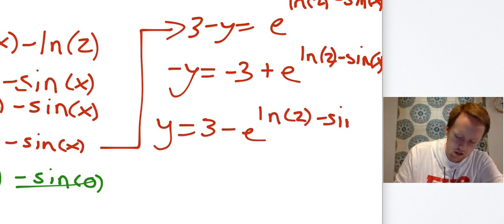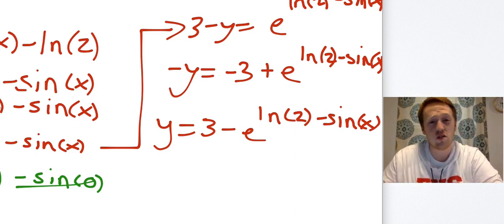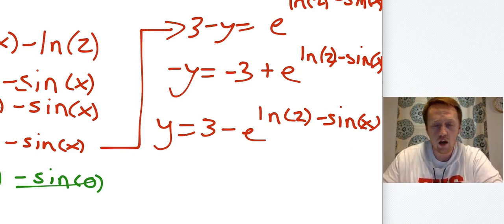And then I need to get rid of the negative sign. y = 3 - e^(ln(2) - sin(x)). This was a kind of difficult one. It's just was there was a lot of algebra in solving for y, but there it is.